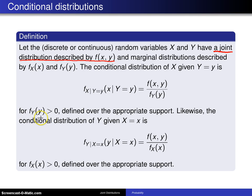Likewise, the conditional distribution of Y given X, all we are doing now is swapping the roles of the two random variables, will be the joint divided by the marginal of X. Again, assuming we are not dividing by zero and defined over the appropriate support.